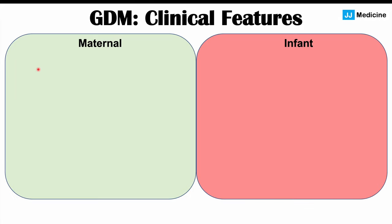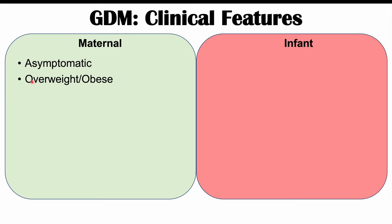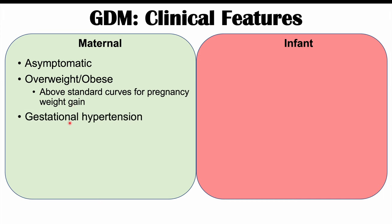Looking at clinical features, starting with maternal short-term effects: most pregnant patients with gestational diabetes can be asymptomatic and only identified through screening. Others may be overweight or obese with a BMI greater than 25, and during pregnancy may gain weight above standard curves. They can also have gestational hypertension and an increased risk of preeclampsia.